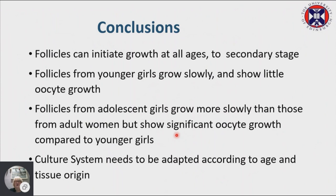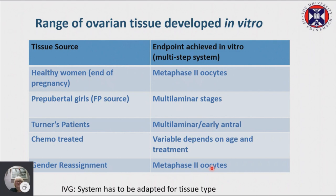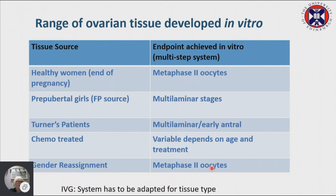We're now working on adapting the system to support different types of follicles. From healthy women we can get metaphase 2. From prepubertal girls we're still only at multilaminar stages — that's work in progress. With fertility preservation patients we've got some multilaminar and early antral. Chemotherapy-treated tissue depends entirely on the treatment — in some cases nothing happens and follicles die, in others we can get development. The gender reassignment patients become a really interesting model, as we can get metaphase 2 oocytes from them, albeit at a much lower rate than from women at cesarean section.